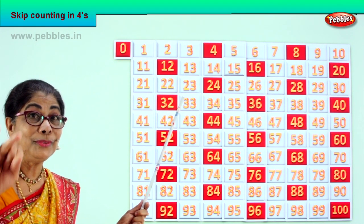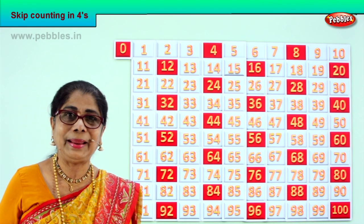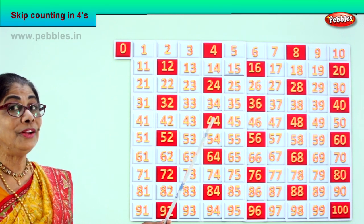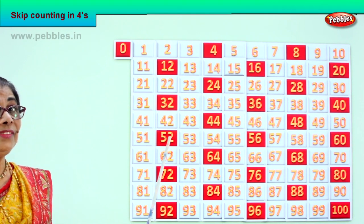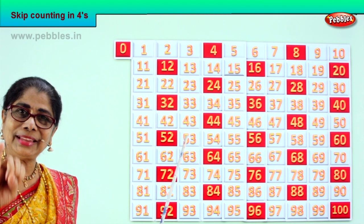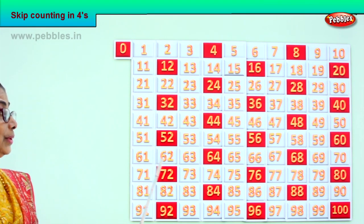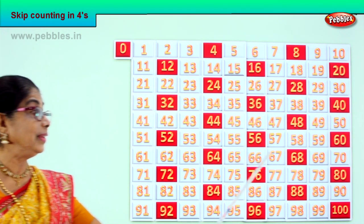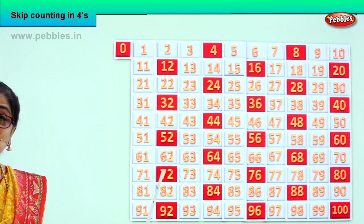After 32: 33, 34, 35, 36. After 36: 37, 38, 39, 40. After 40: 41, 42, 43, 44. After 44: 45, 46, 47, 48. After 48: 49, 50, 51, 52. After 52: 53, 54, 55, 56. After 56: 57, 58, 59, 60. After 60: 61, 62, 63, 64. After 64: 65, 66, 67, 68. After 68: 69, 70, 71, 72.